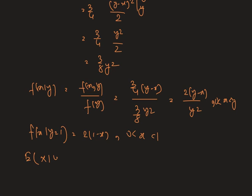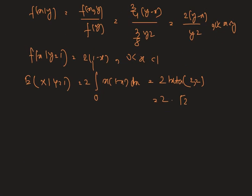Therefore, the expected value of x given y equals to 1 is equal to 2 into integration 0 to 1 of x into 1 minus x dx. This is nothing but 2 into beta 2 comma 2. Therefore, we get 2 into gamma 2 multiplied by gamma 2 divided by gamma 4.